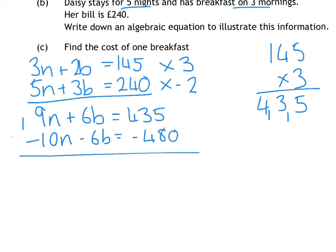Double everything gives you minus 10, minus 6, minus 480. And now we just add these two rows together. So 9 take away 10 is minus N. Your B's will cancel out, and that gives you negative 45. So the cost of a night is 45, so it's £45 for a night in the hotel.